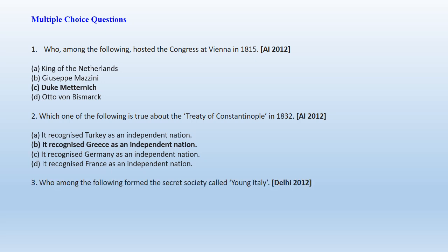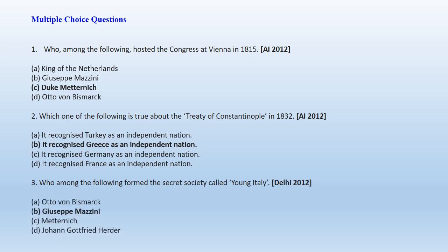Question 3: Who among the following formed the secret society called Young Italy? A. Bismarck, B. Giuseppe Mazzini, C. Metternich, D. Johann Gottfried Herder. The right option is Giuseppe Mazzini. Giuseppe Mazzini formed the secret society called Young Italy.